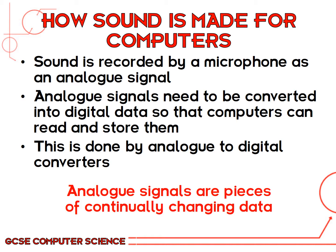All sound is basically analog sound recorded by a microphone, and the microphone picks up changes in air pressure, which essentially creates it as an analog signal. We need to convert this analog signal into digital data — binary strings — so that computers can read and store them. This is done by analog to digital converters. Analog signals are pieces of continually changing data.